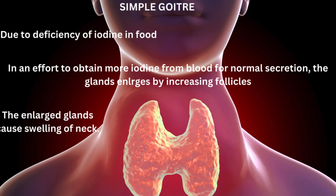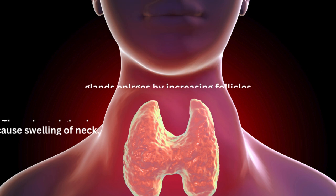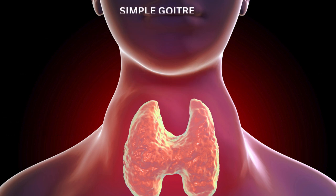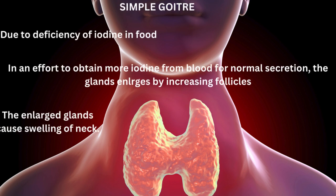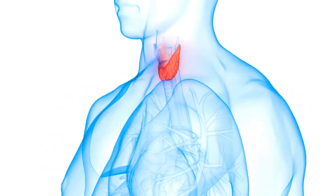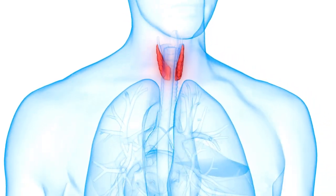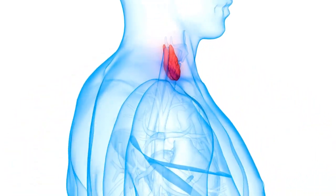Let's also talk about simple goiter, which is mainly due to iodine deficiency in the diet. When there is no proper iodine availability, to obtain more iodine from the blood, the gland produces more than normal amounts, which increases the follicular size. This leads to enlargement of the neck — swelling and increased neck size. This swelling of the neck is called simple goiter.